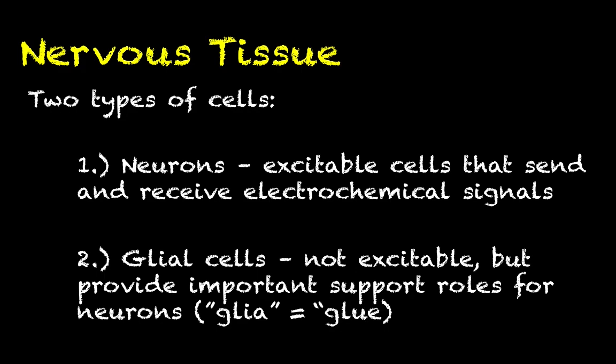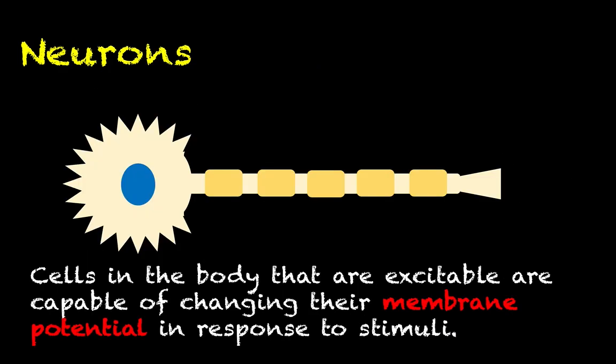To help you remember that glial cells serve these support roles, think of glia as being the glue that holds the nervous tissue together, because glia is derived from a Greek word that literally means glue.